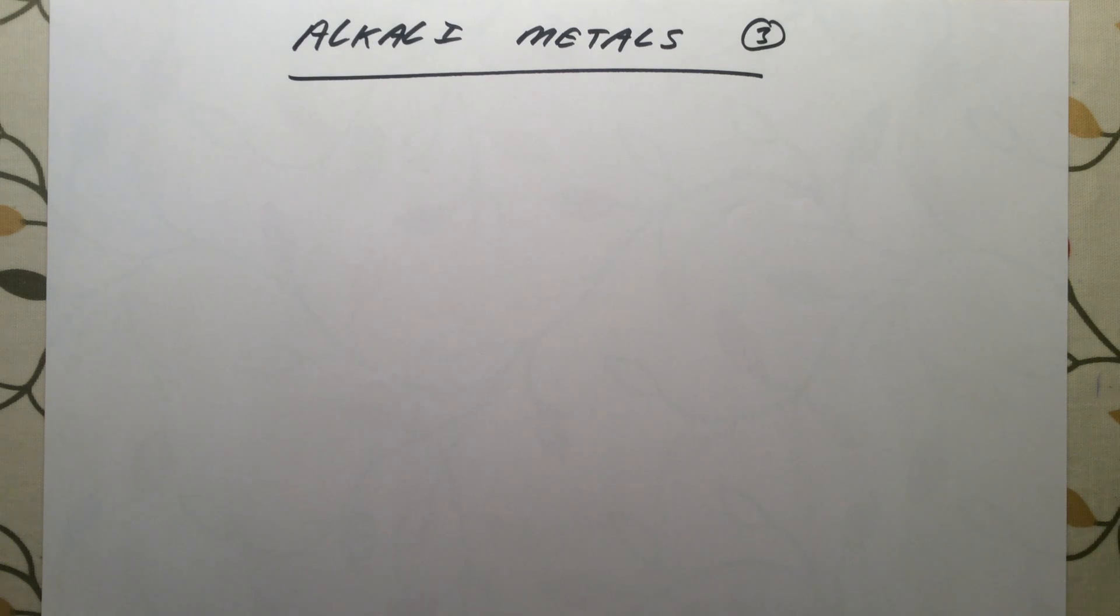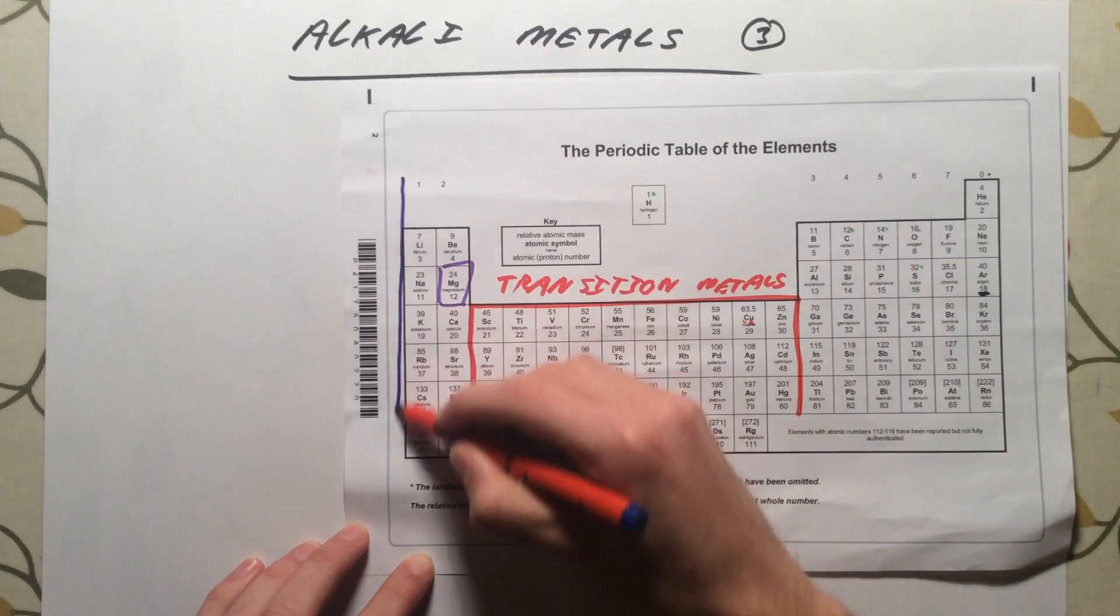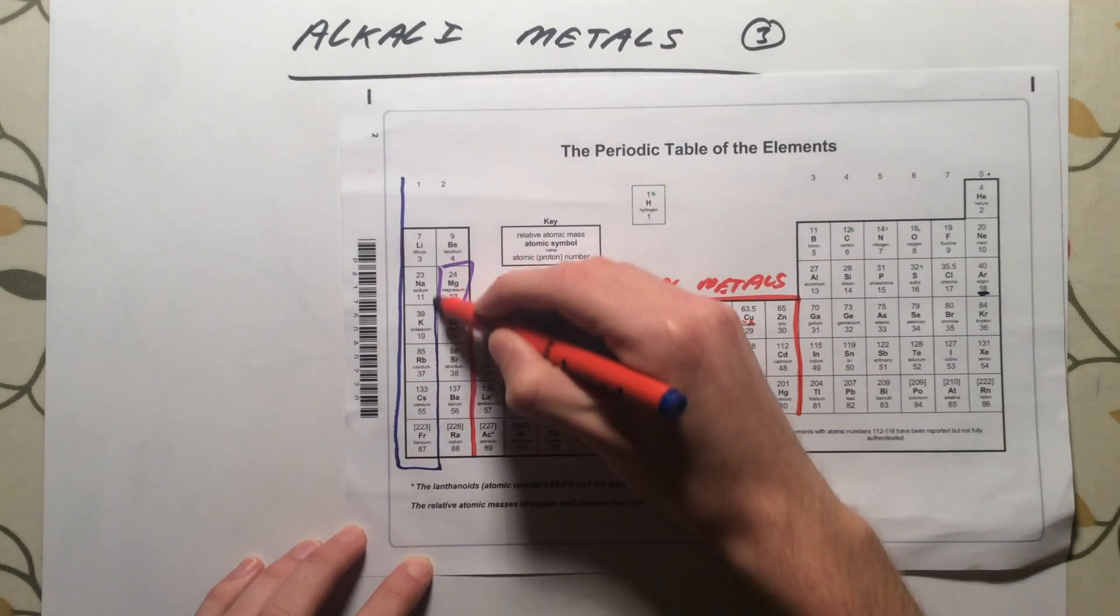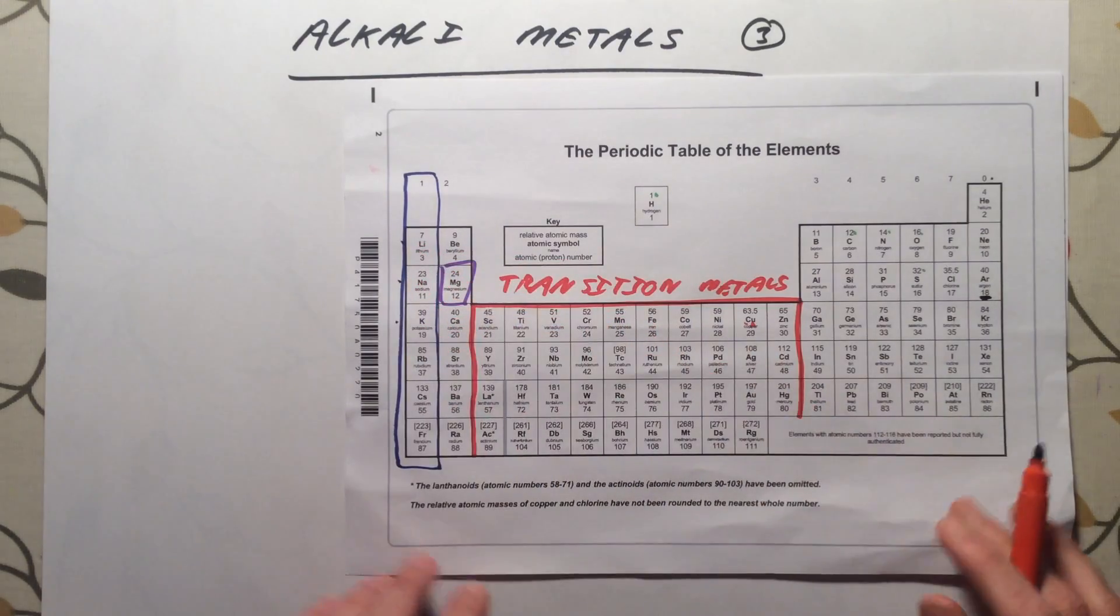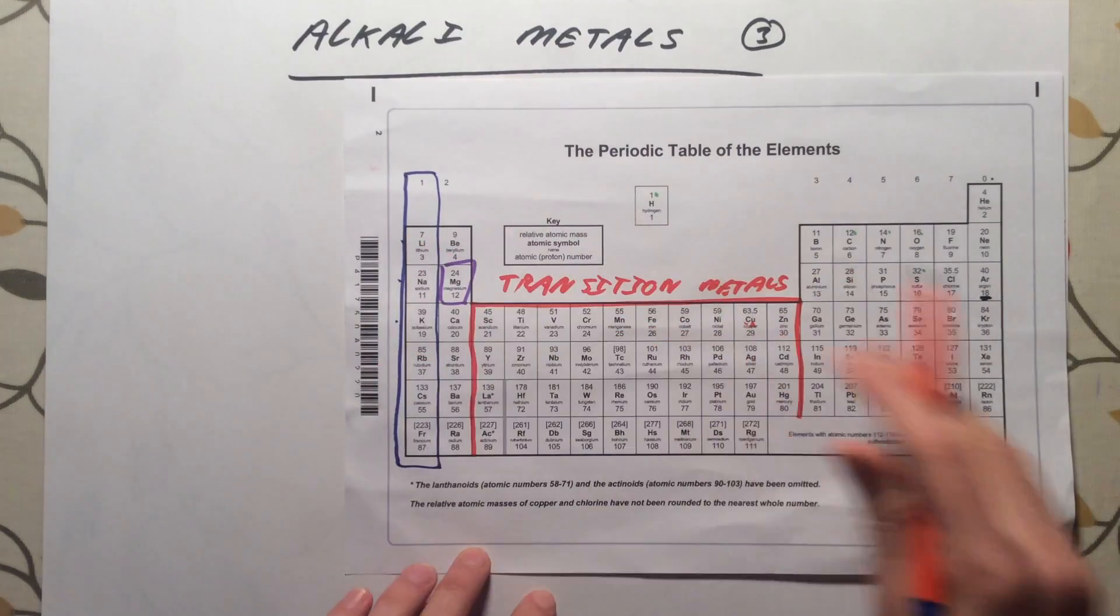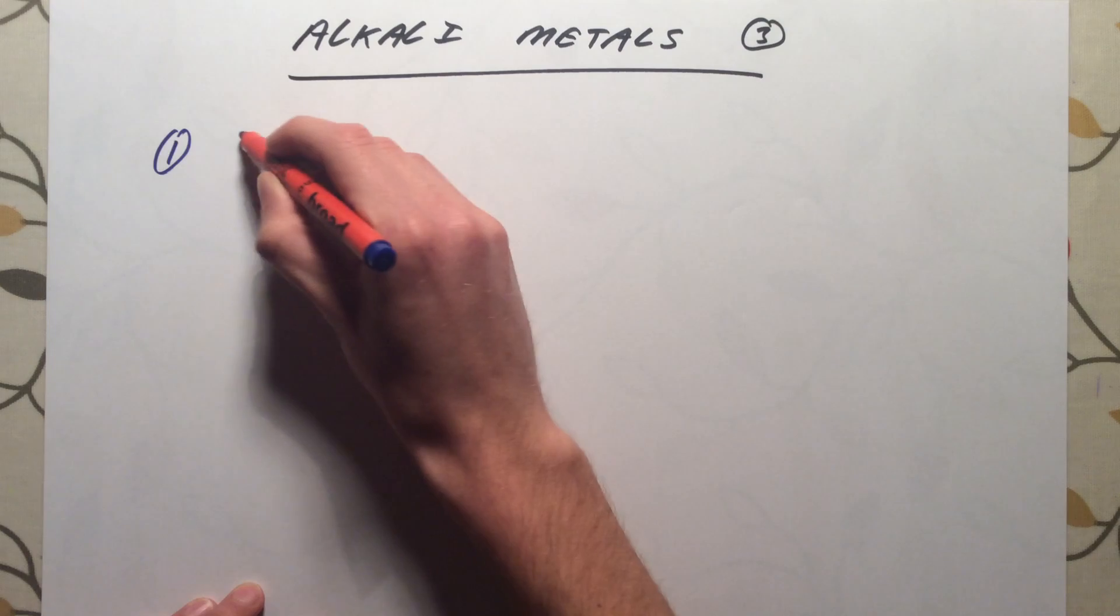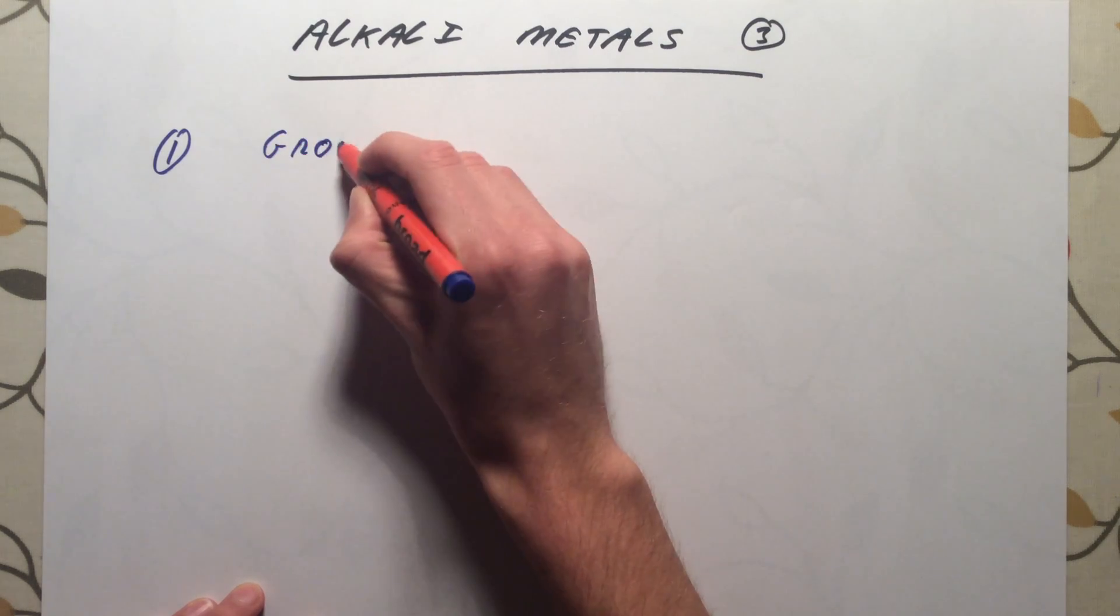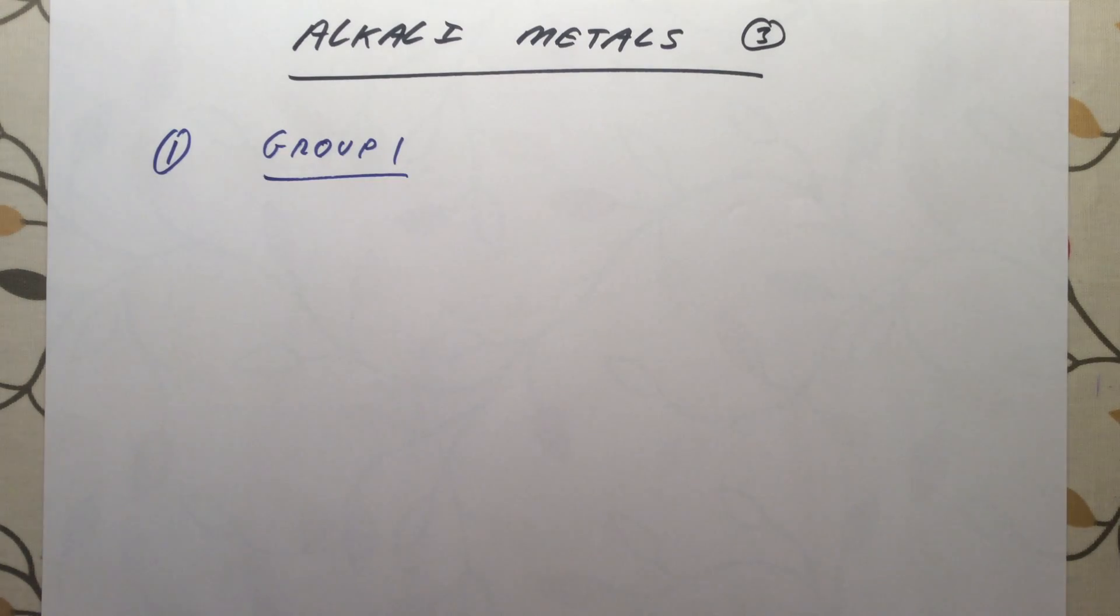Here we're going to be discussing the first group of the periodic table, group 1, the alkali metals. If we look at our periodic table, our alkali metals are the very first group we have, and the ones we need to know about are lithium, sodium, and potassium, although the properties and trends we discuss will continue if you go further down as well. These elements are all in group 1 in our periodic table. We call them the alkali metals.